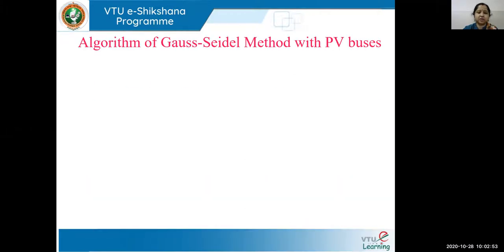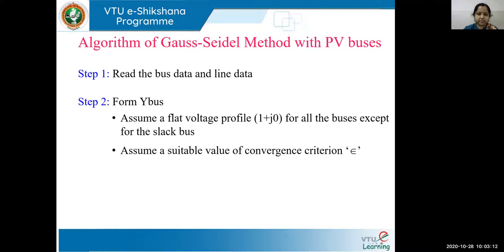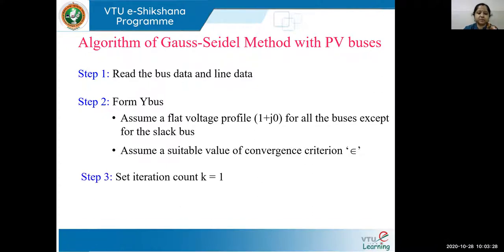Let us go through the algorithm — how does the algorithm change when PV buses are considered? The first few steps are the same. Step number one: read the bus data and line data. Step number two: form the Y-bus, assume a flat voltage profile of 1 + j0 for all the PQ buses, and assume a suitable value for your convergence. Step number three: set the iteration count K equal to 1. Step number four: set bus count P equal to 1.